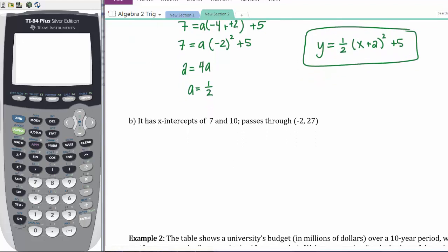Part B: It has x-intercepts of 7 and 10, and passes through the point (-2, 27). Since it's giving me x-intercepts, I want to write down intercept form: y = a(x - p)(x - q). That means p = 7 and q = 10, and it's passing through the point x, y.